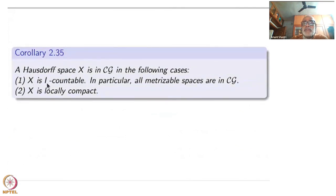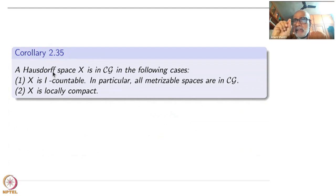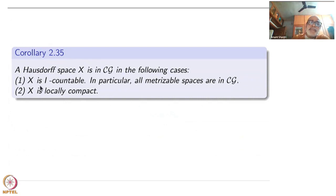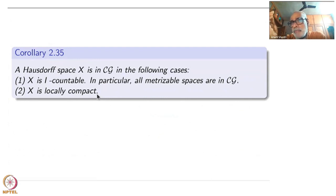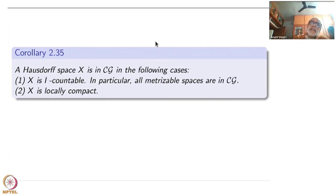As soon as you have a Hausdorff first countable space, a point is a limit point if and only if you have a sequence converging to that point. Along with that sequence, take that point also. Suppose x_n converges to x; then take the set {x_n} union {x}. That is always a compact set, so x will be a limit point of that compact. For local compactness it is even easier: take a point which is a limit point of some set — there will be a neighborhood around that point which is compact, and you can restrict yourself to that compact set.